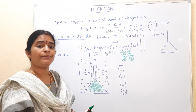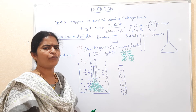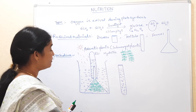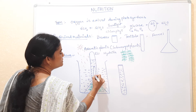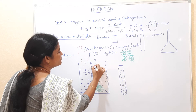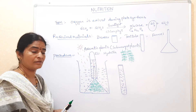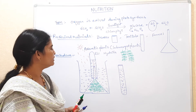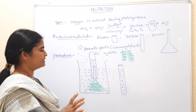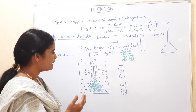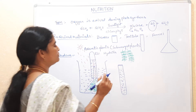We need to keep the experiment for 3 to 4 hours — it depends on the intensity of sunlight; if sunlight is strong, 4 hours is sufficient. After 2 to 3 hours, if you observe the experiment, you can see water bubbles moving towards the test tube. We don't know which gas is inside yet. After 3 to 4 hours, take out the test tube from the funnel.